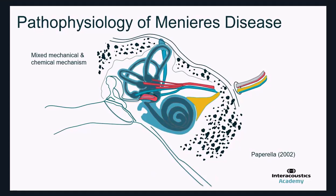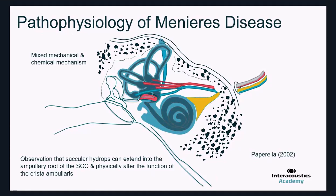Schuknecht's theory was first reported as Reissner's membrane rupture, secondary to endolymphatic duct distension. That was based on a series of temporal bone studies looking at changes in patients who had experienced symptoms related to Ménière's disease. The theory proposed a mixture of potassium-infused perilymph bathing the basal surface of the hair cells to potentially toxic levels, resulting in episodes of dizziness, and subsequent functional change in both vestibular and cochlear function over time. Saccular hydrops can extend into the ampulla of the semicircular canal, physically altering the function of the crista ampullaris.